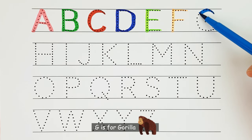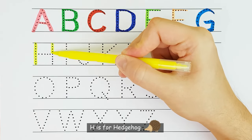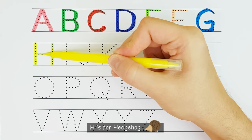G. G is for gorilla. G. H. H is for hedgehog. H.